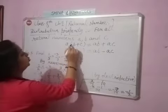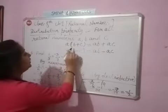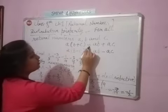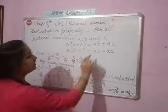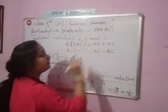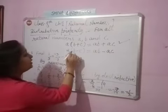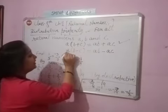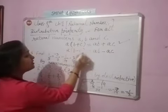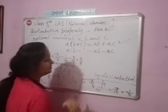a into b plus c is equal to a multiply b plus a multiply c. And if a into b minus c, then a multiply b minus a multiply c.